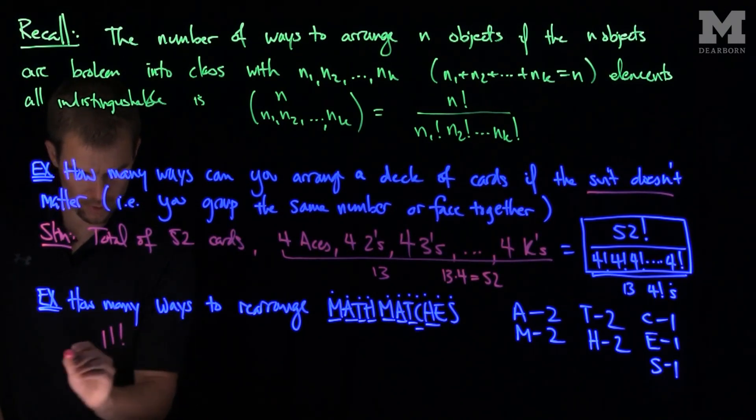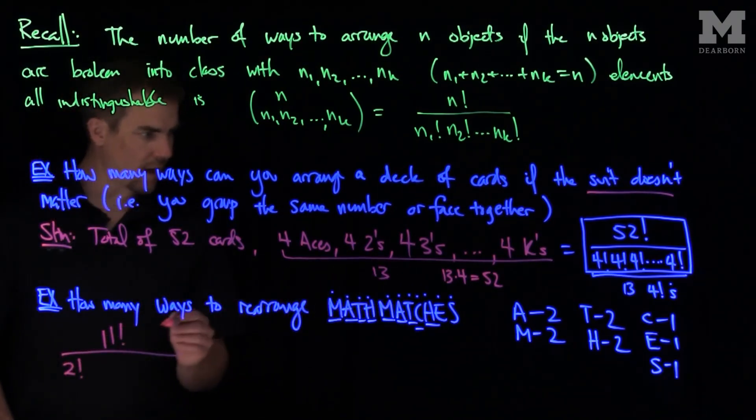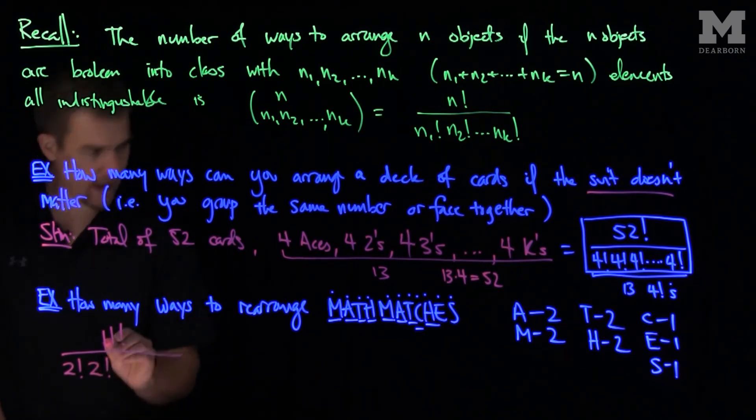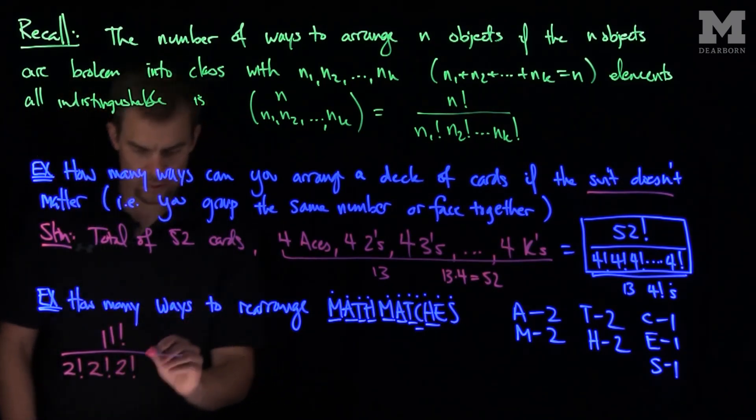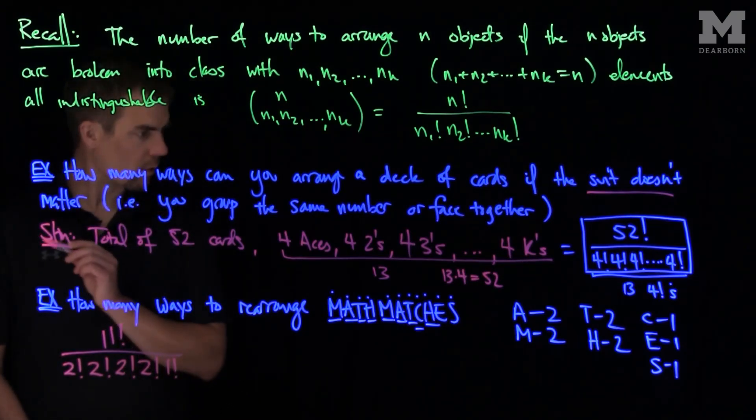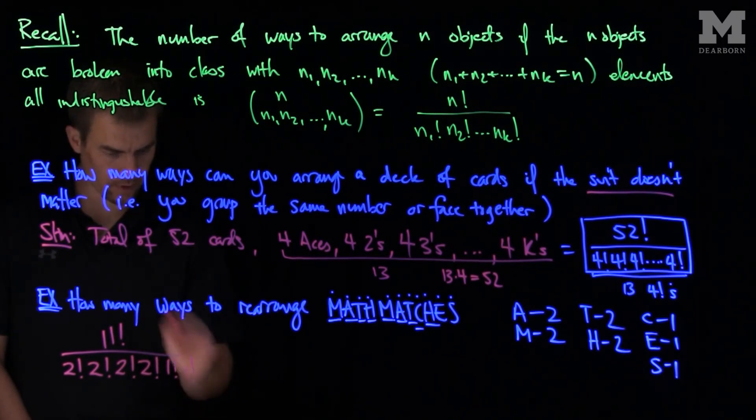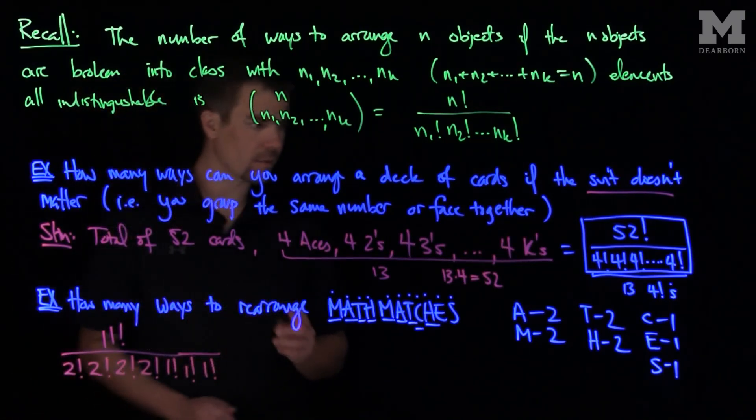11 factorial over 2 factorial for the A's, 2 factorial for the M's, 2 factorial for the T's, 2 factorial for the H's, 1 factorial for the C's, 1 factorial for the E's, and 1 factorial for the S's.